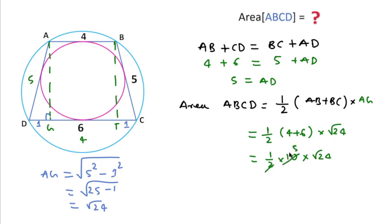This is 1/2 times 10 times square root of 24, so 5 times square root of 24 will be the right answer for this question. Thanks for watching this video, and please like, share, and subscribe to this channel.